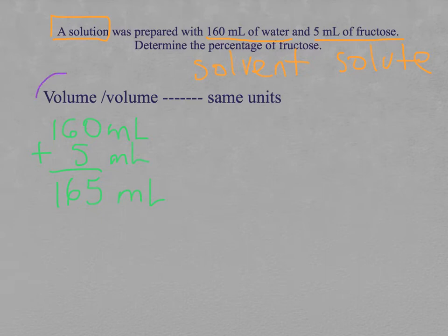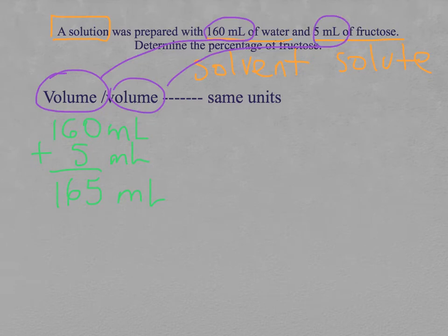We need to be sure that all the units we are using for the cross proportion are the same. In this example, we have one quantity in volume, which are these milliliters, and the other one is also in volume, and it's also in milliliters. We don't need to convert any of these numbers. We are just adding the number of milliliters of water with the number of milliliters of the solute.